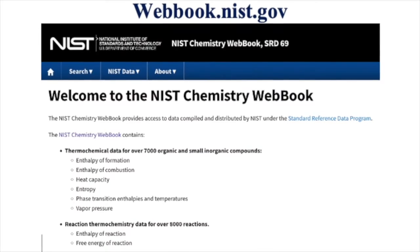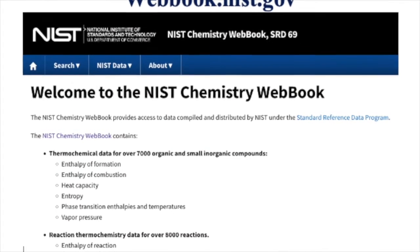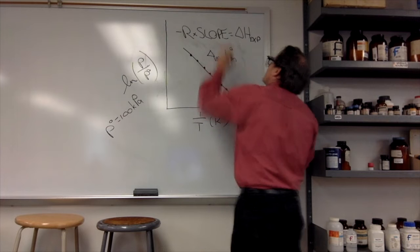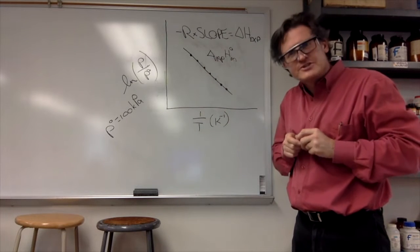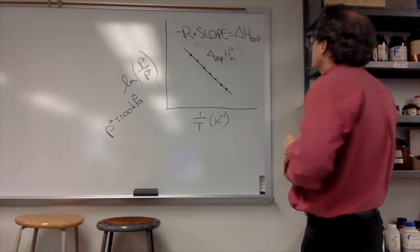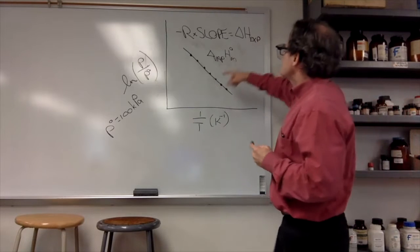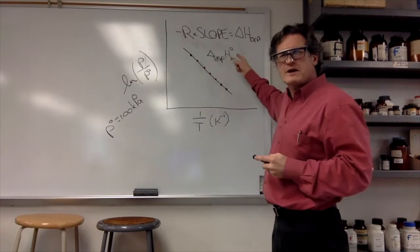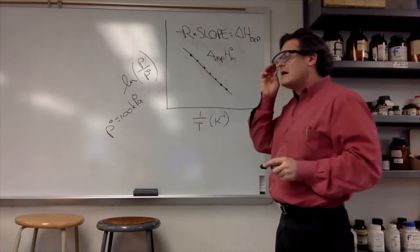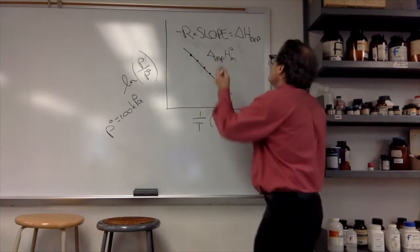Then you go and you look up a value of the enthalpy of vaporization in the NIST WebBook and you compare. You might say, 'Wow, this data was so good. Wait a second, why don't these two numbers agree?'